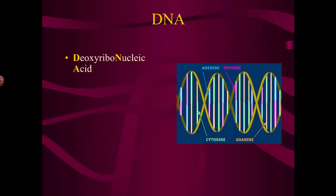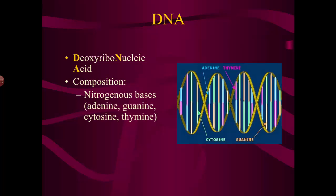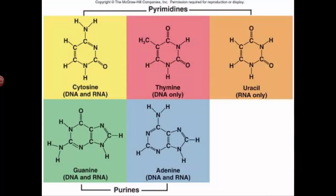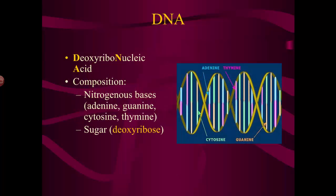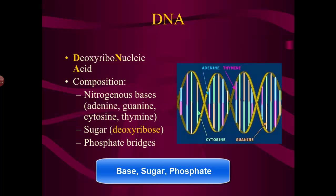Starting with DNA — the molecule that contains the biological information. DNA stands for deoxyribonucleic acid. It's made of three major parts: a base, specifically a nitrogenous base — those are what give the bases their names: adenine, guanine, cytosine, and thymine, or A, G, C, and T. A sugar — in the case of DNA, that sugar is called deoxyribose, which is where the 'D' comes from. And finally, phosphate bridges. So three components of DNA: base, sugar, and phosphate.